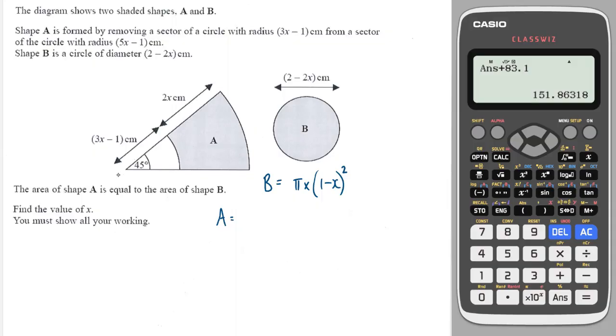So the larger sector will be 45 over 360, which simplifies down to 1 eighth, times by the radius, or the π times the radius squared, and the radius being 5x minus 1. So it's π times by 5x minus 1 squared.